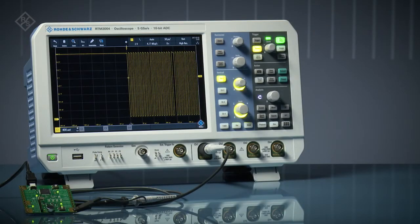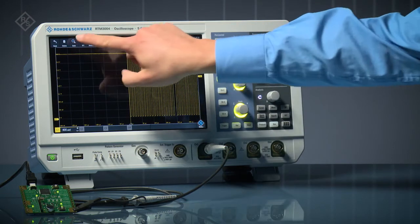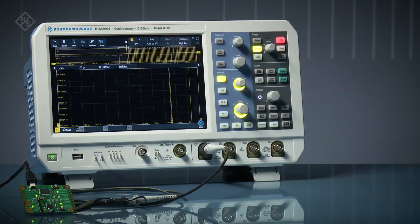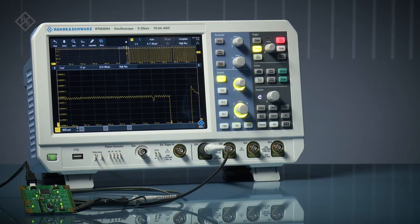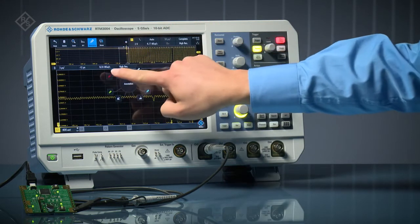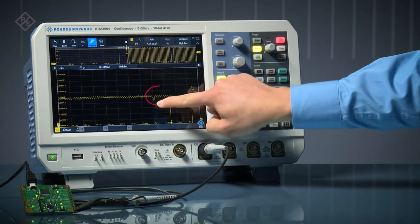Rohde & Schwarz RTM 3000 Series Oscilloscopes feature vertical zoom. Simply draw a box around the portion of the signal you want to magnify. Combined with the instrument's 10-bit ADC, vertical zoom allows you to find small signals in the presence of large amplitudes, like this one.